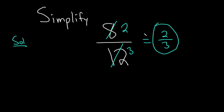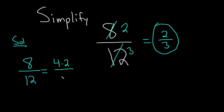You could show some more work. You could say 8 over 12 — well, let's see — that's 4 times 2 over 4 times 3. Look, the 4s go away. You get 2 over 3.